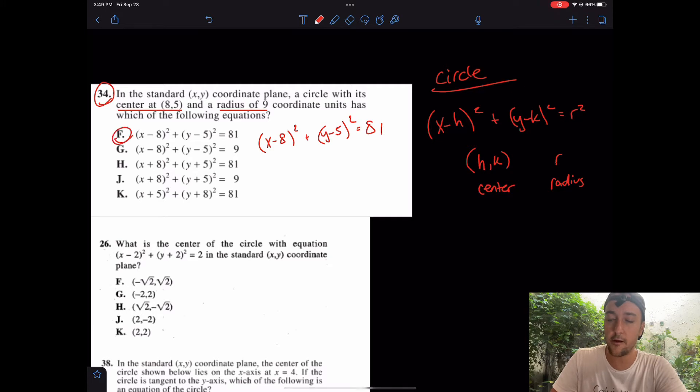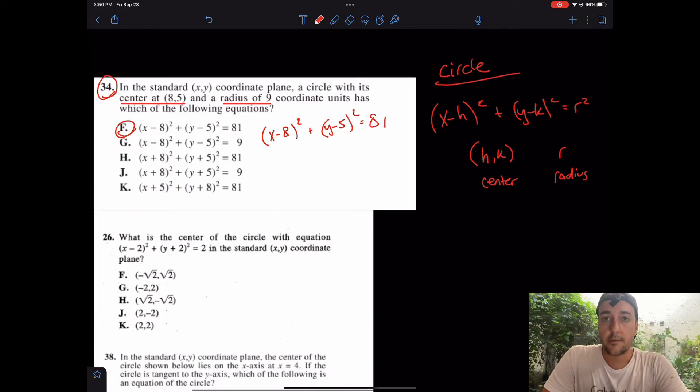In that case, remember that the formula said r squared. In that case, we have 81. I really like the answer choice of F. Not too bad, that really only took me seconds.